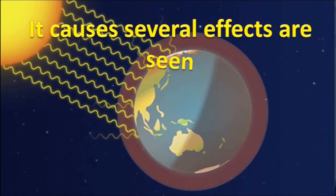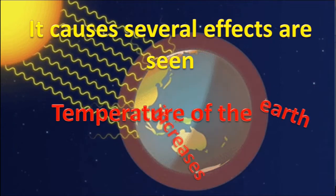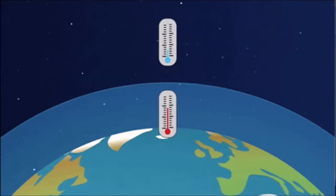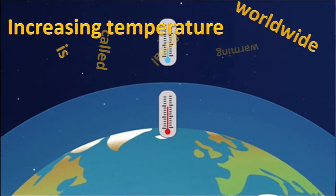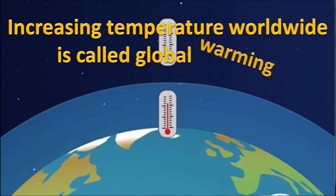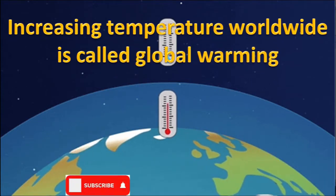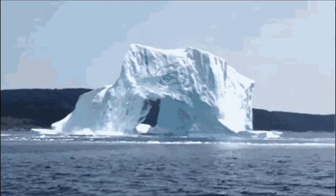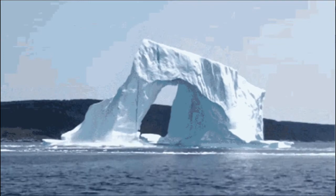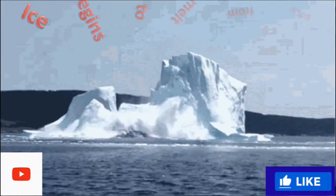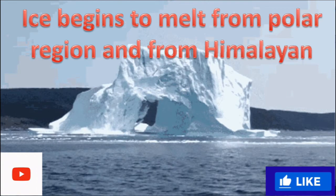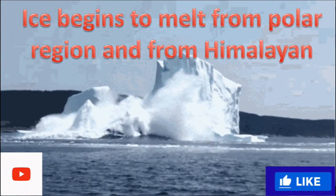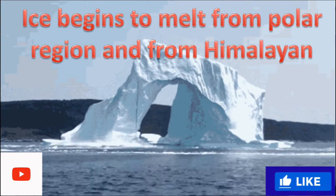Several effects are seen due to the greenhouse effect. The temperature of the earth increases, and increasing temperature worldwide is called global warming. Ice begins to melt from polar regions and from the Himalayan region due to the greenhouse effect. As a result, the water surface on the earth increases due to rising surface temperature.